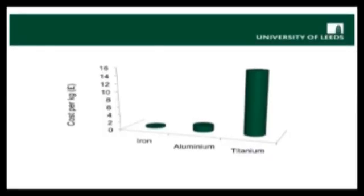These of course vary with market forces, but the current values are about 30 pence for a kilogram of iron, £1.50 for aluminium, and £16 a kilo for titanium. This is a 50 fold difference between the cheapest and most expensive metal.